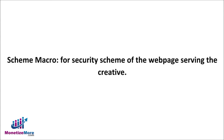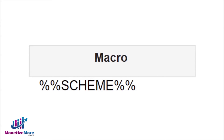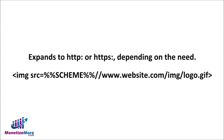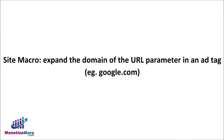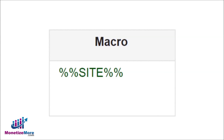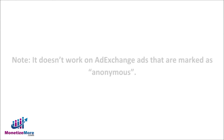You may want to embed a macro specific to the security scheme of the webpage serving the creative. The Scheme Macro expands to HTTP colon or HTTPS colon depending on the need, and you can put it at the beginning of a URL. For instances where you want to expand the domain of the URL parameter in an ad tag — for example, google.com — embed the Site Macro. This macro may be used to modify your creative based on where the request originates, but please note it doesn't work on ad exchange ads that are marked as anonymous.